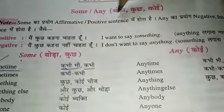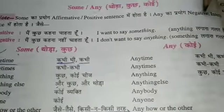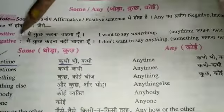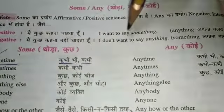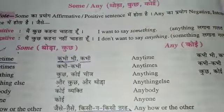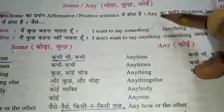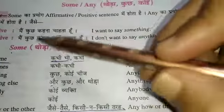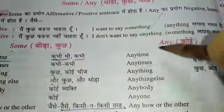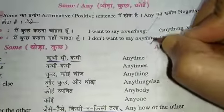Today we will learn the difference between some and any. Some ka prayog affirmative ya positive sentence mein hota hai. Any ka prayog negative aur interrogative mein hota hai. For positive, like 'I want to say something.' And for negative, like 'I don't want to say anything.' So for negative we will have to use anything.